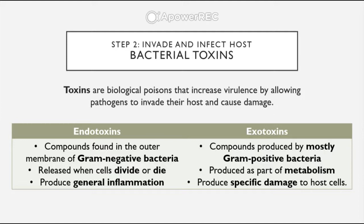Something that can be confusing is that compounds found on the outer membrane of gram-negative bacteria are called endotoxins — 'endo' meaning inside or in. The key difference is that exotoxins are actively released, while endotoxins are simply part of the bacterial cell.